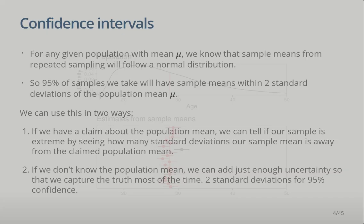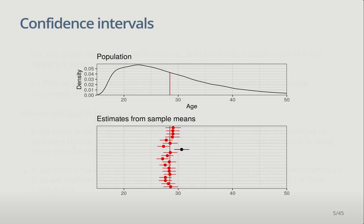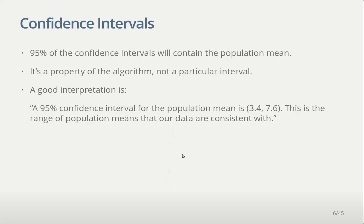We have our population, which we're pretending we don't know about — the situation we find ourselves in most of the time — with some population mean we also don't know. Under repeated sampling, sample means jump around that unknown population mean. When we make a range around each sample mean using plus or minus twice the standard deviation of the sample mean, that confidence interval is going to capture the truth — the truth will lie inside that confidence interval most of the time, like the red confidence intervals here, but not always — sometimes we'll have a black one that does not contain the population mean.